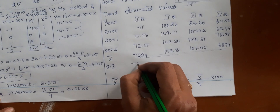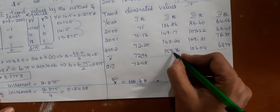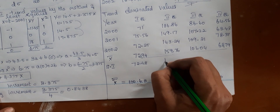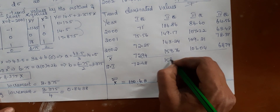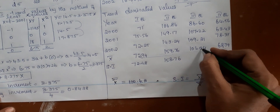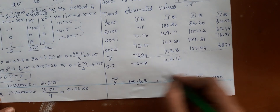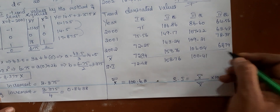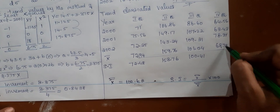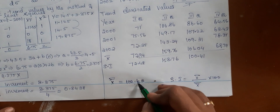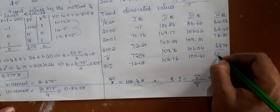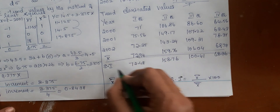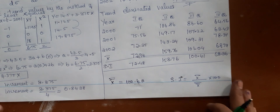The seasonal indices are: 72.48 for the first quarter, 158.76 for the second quarter, 100.41 for the third quarter, and 68.36 for the fourth quarter. These are the final seasonal indices.